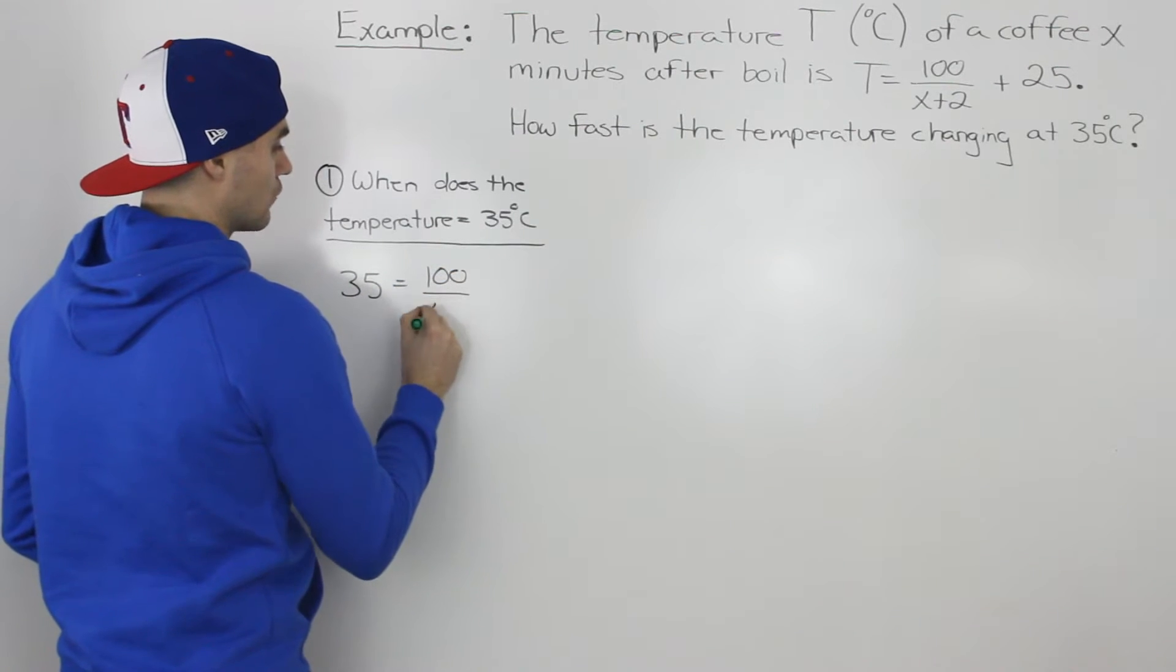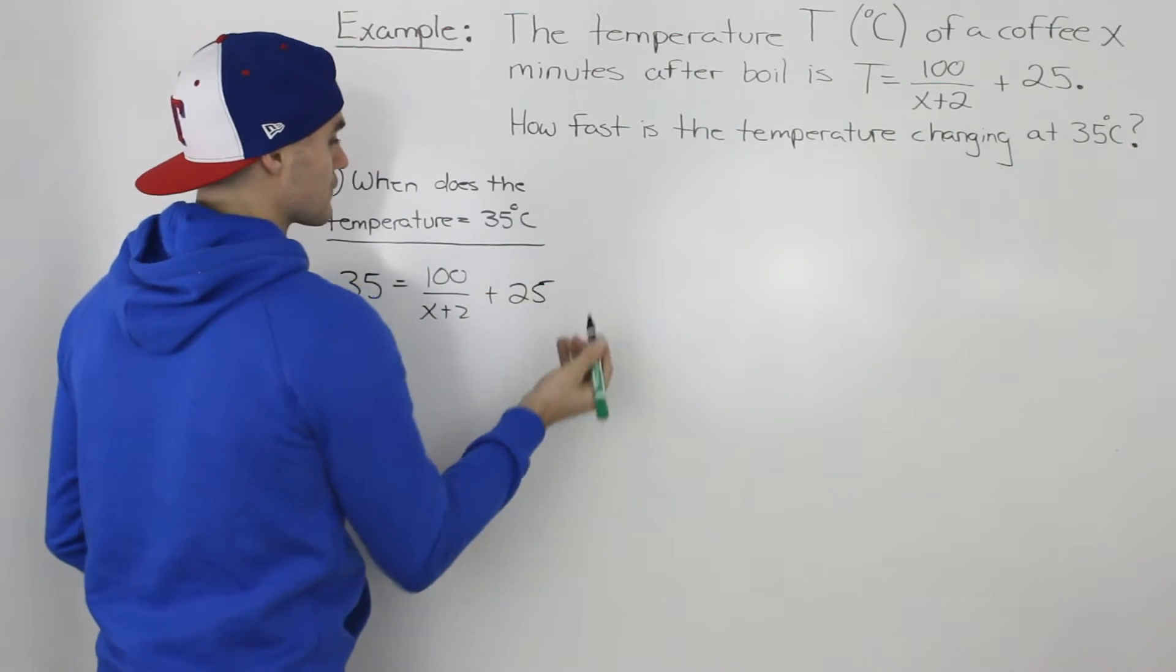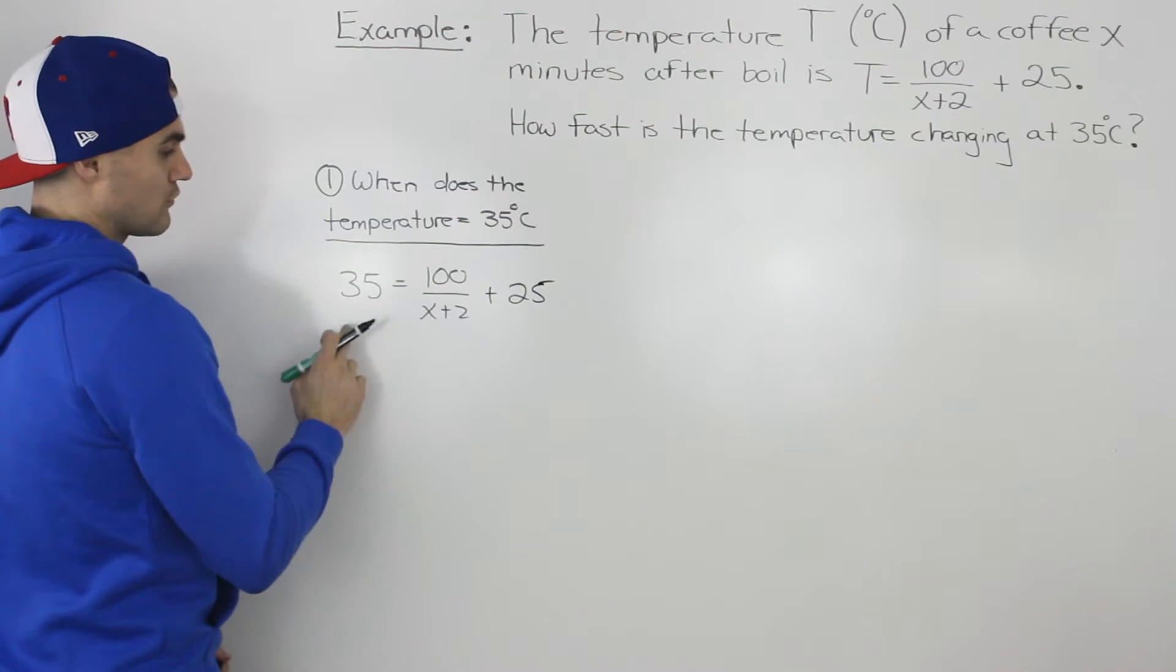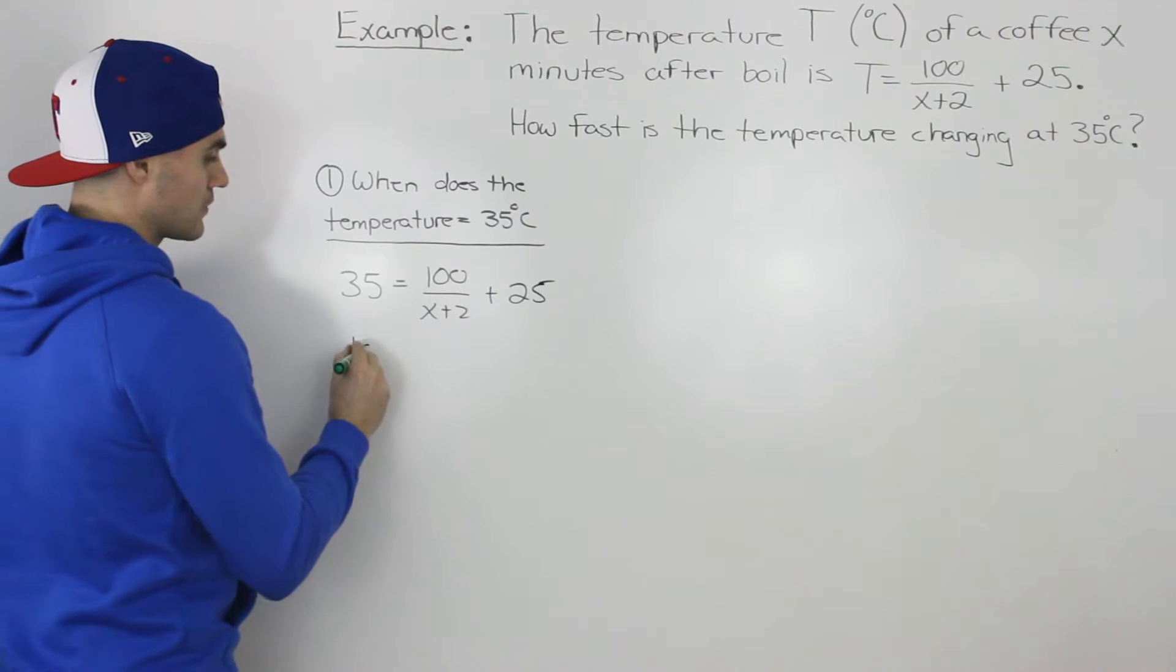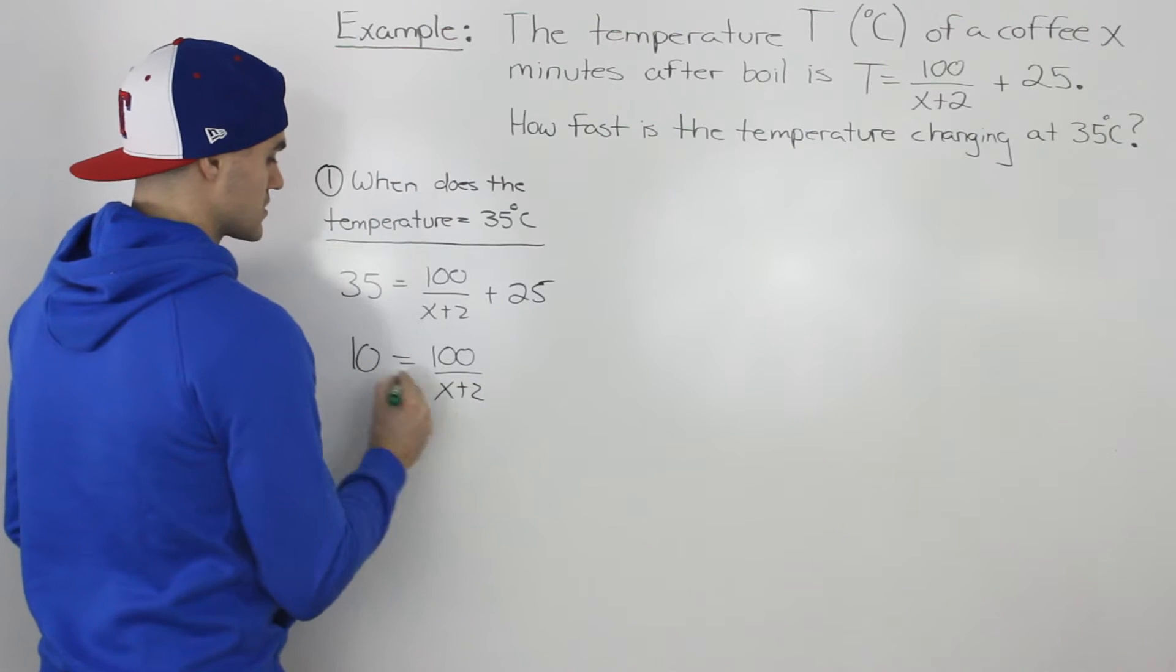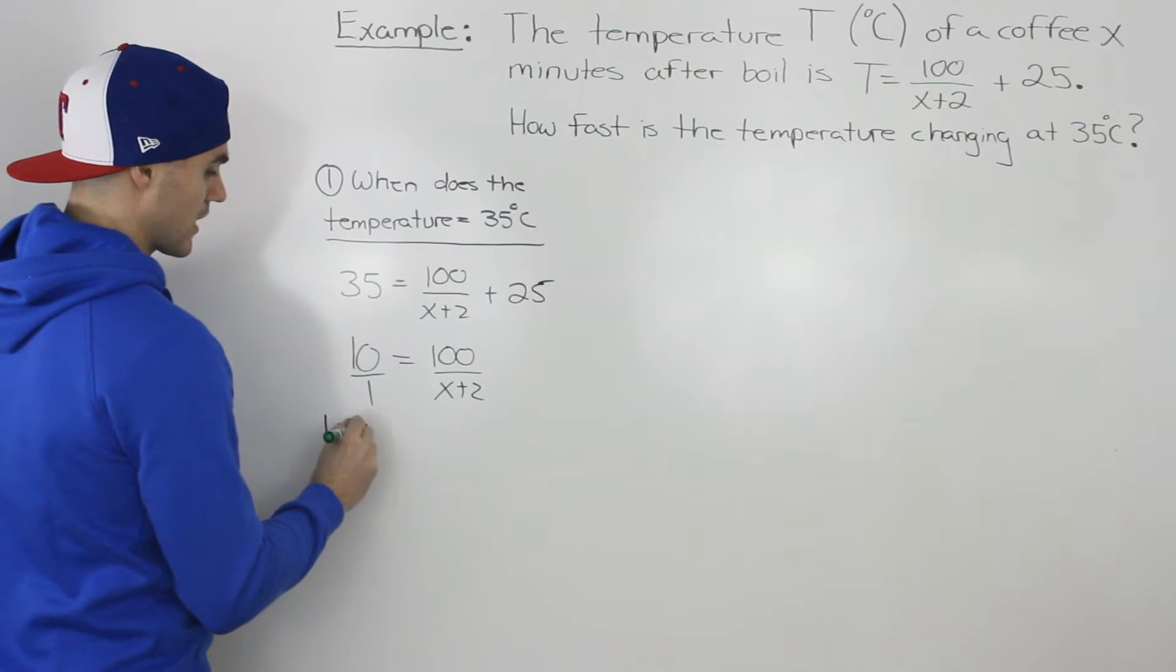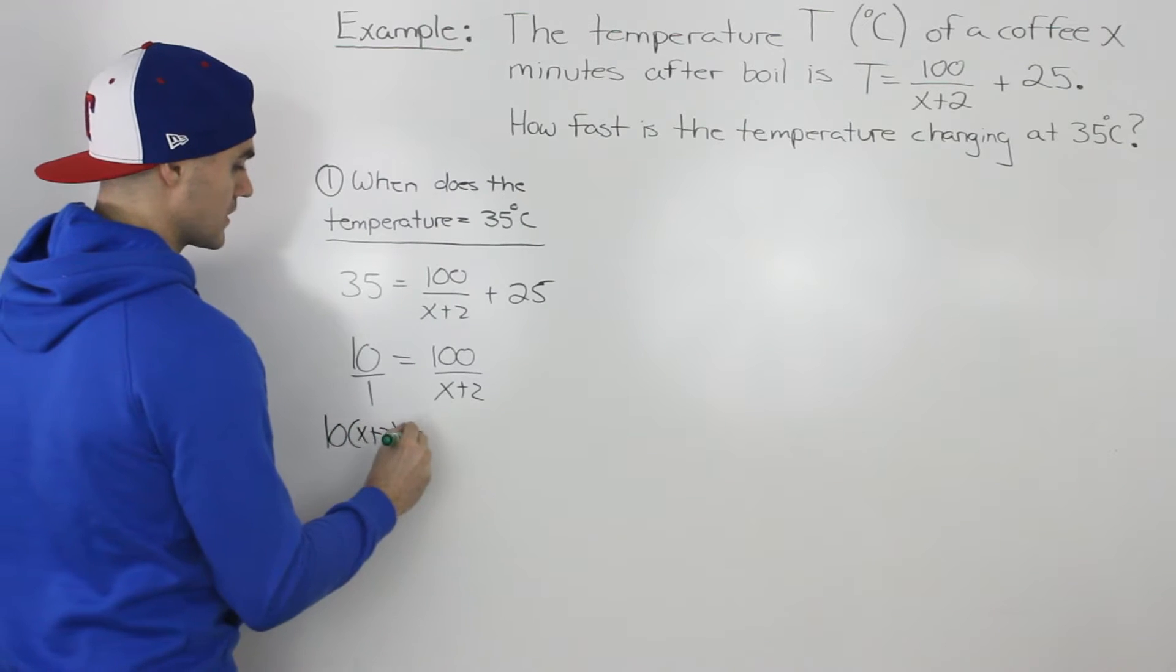So we'd have 100 over x plus 2 plus 25. Now we bring the 25 over, 35 minus 25, that would just give us 10. So this is all over x plus 2. Now we could cross multiply. So we'd have 10 bracket x plus 2 equals 100.